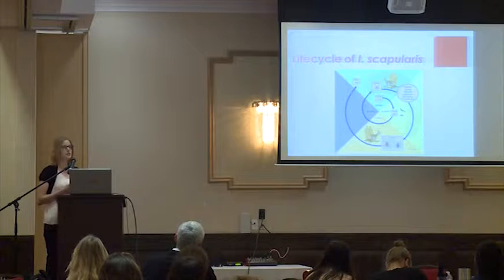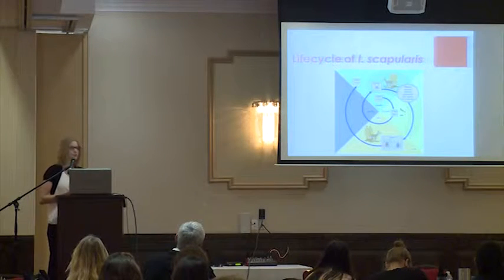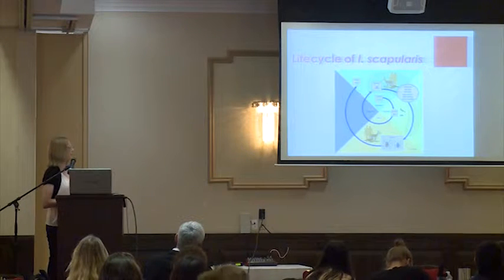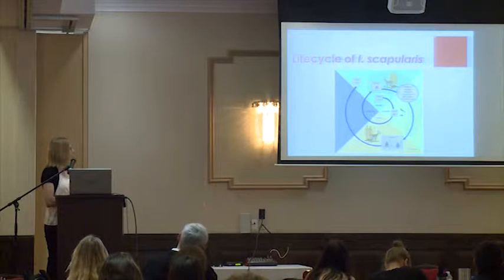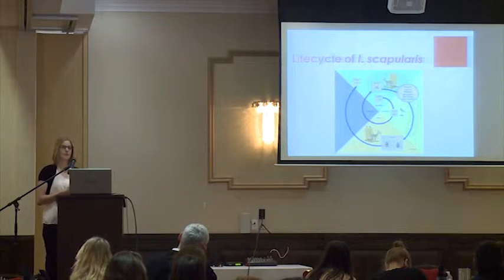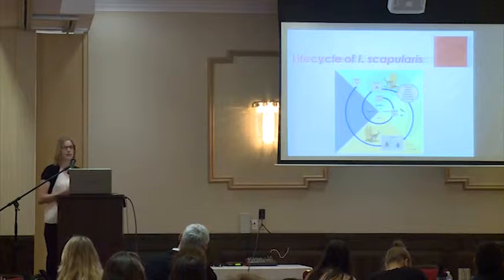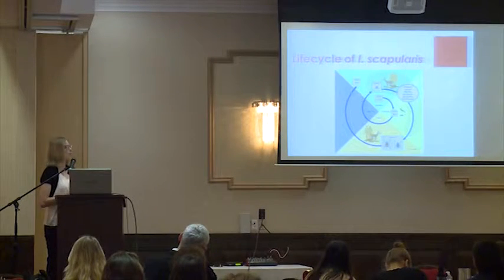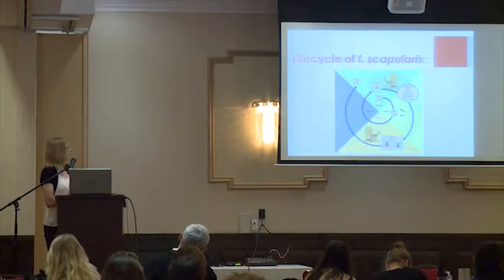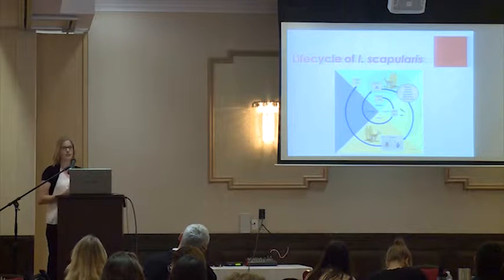Nymphs pose the greatest risk of human disease because they're about the size of a sesame seed — very difficult for the naked eye to recognize — so they can become attached and feed long enough to transmit the bacteria. They're also active in the springtime when everyone is out in shorts and t-shirts, so exposure can be significantly greater. Nymphs will also feed on larger mammals, then molt into adults that are active in the fall. Adults prefer larger mammals, and the white-tailed deer is the preferred host. After a blood meal, adults start the cycle again and lay eggs in the spring.